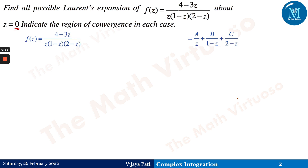First, we have to simplify the function f(z). To get the circles and their radii, we need to find the singularities. To find the singularities, we first need to do the partial fraction of this function. The degree of the numerator is one and the degree of the denominator is three, so we can directly go ahead with the partial fraction.